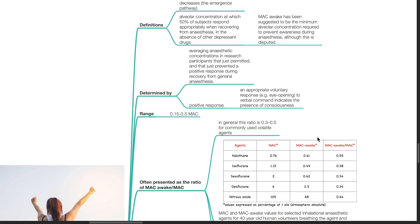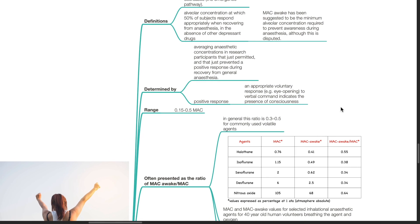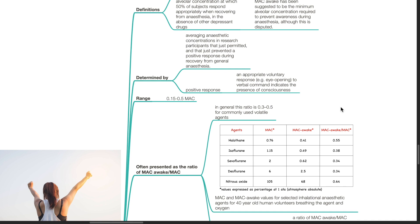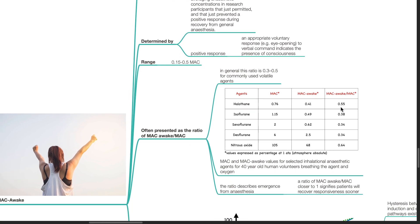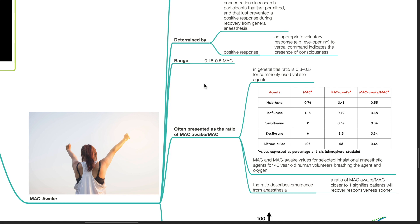MAC awake is determined by averaging anesthetic concentrations in research participants that just permitted and that just prevented a positive response during recovery from general anesthesia, where a positive response is an appropriate voluntary response, such as eye-opening to verbal command, which indicates the presence of consciousness. The range for MAC awake is 0.15 to 0.5 MAC.